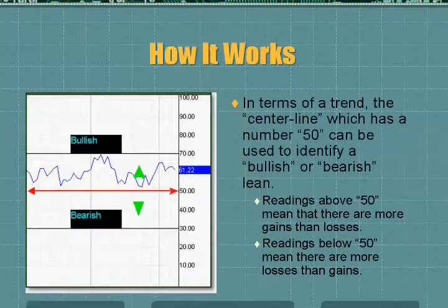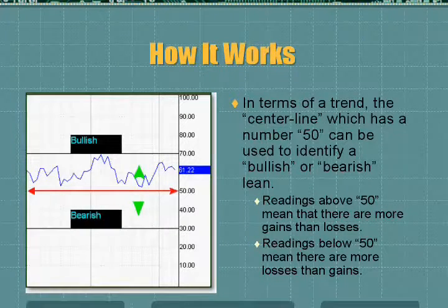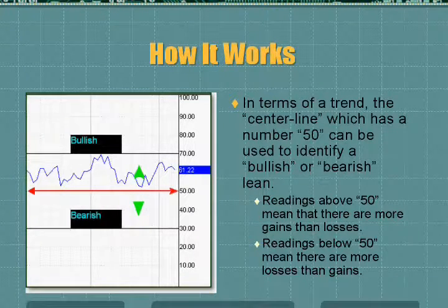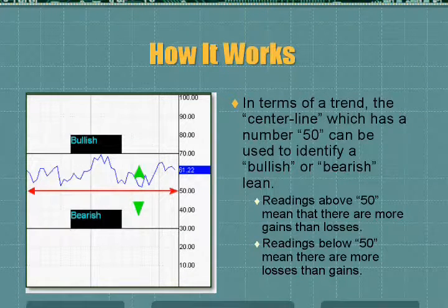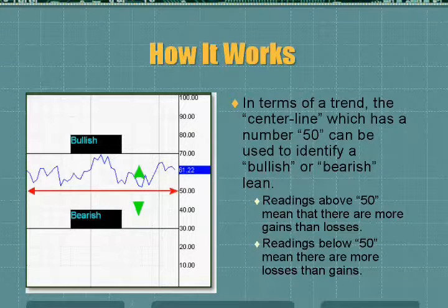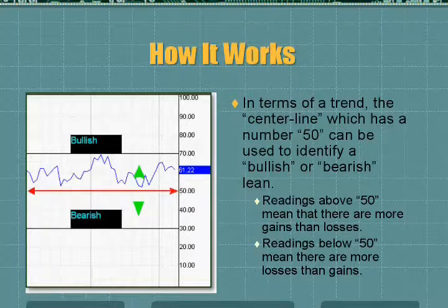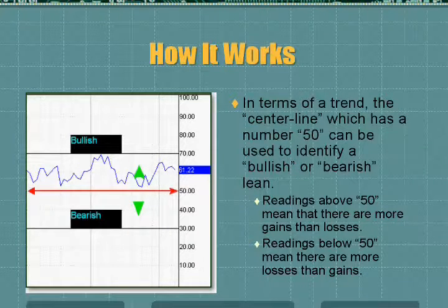Now, in terms of a trend, the center line, which has a number of 50, can be used to identify whether it has a bearish or a bullish lean. Readings above 50 means that there are more gains than losses. Readings below 50 means there are more losses than gains. In this example, we can see it's above 50, so it has more gains than losses for quite a period of time. And that helps us know how strong it is — in this particular instance, it is very, very strong and bullish.